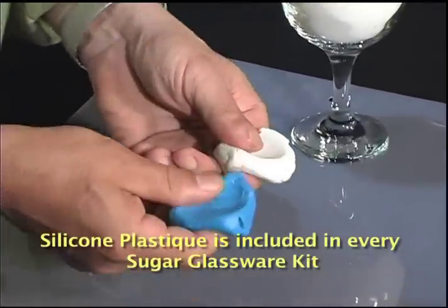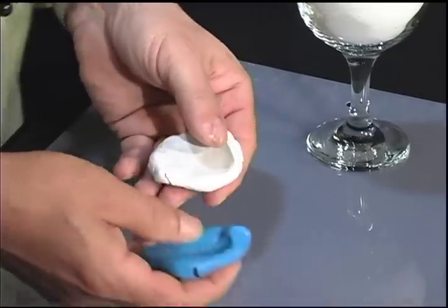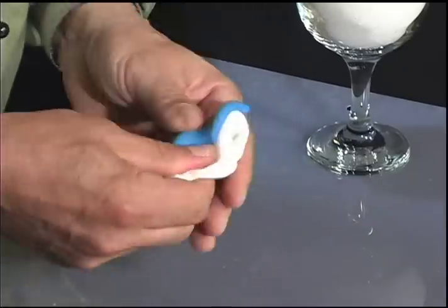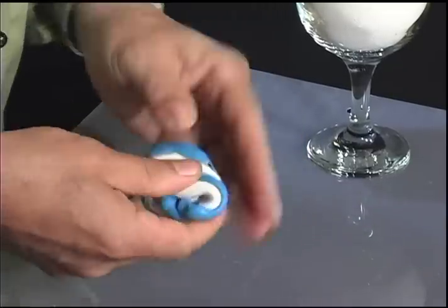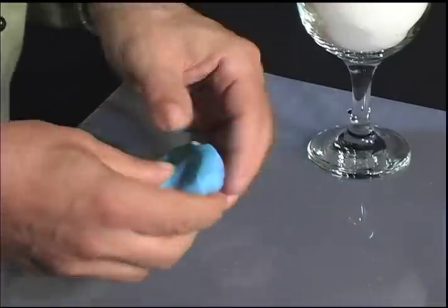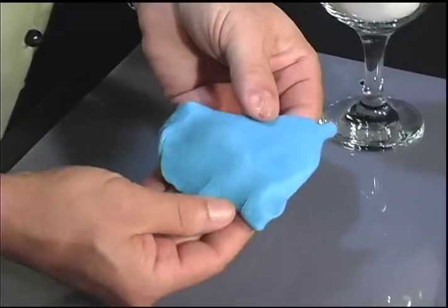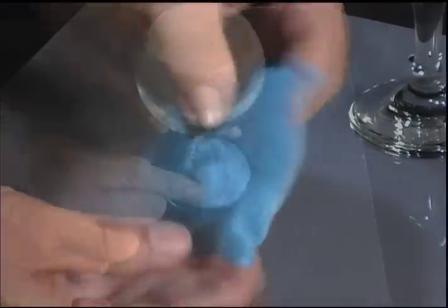Silicone plastique is a food grade silicone that comes in two parts, part A being blue and part B is white. Equal amounts of part A and B are mixed by hand until a uniform color is achieved. Silicone plastique has a work time of 10 to 15 minutes and cures in an hour to an hour and a half.